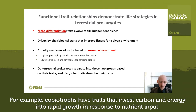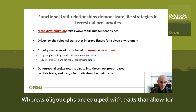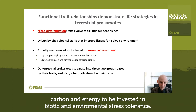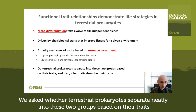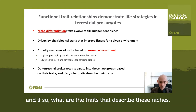For example, copiotrophs have traits that invest carbon and energy into rapid growth in response to nutrient input, whereas oligotrophs are equipped with traits that allow for carbon and energy to be invested in biotic and environmental stress tolerance. We asked whether terrestrial prokaryotes separate neatly into these two groups based on their traits, and if so, what are the traits that describe these niches.